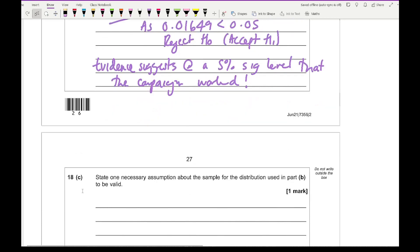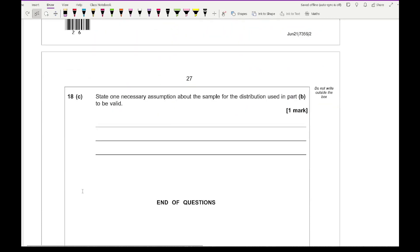Then the last thing we need to state is: state one necessary assumption about the sample for the distribution used in part B to be valid. The sample needs to be a random sample. And there we go.